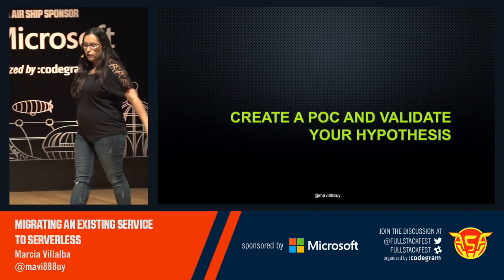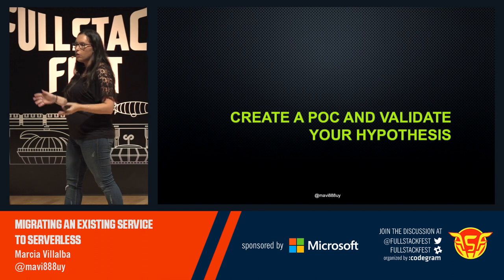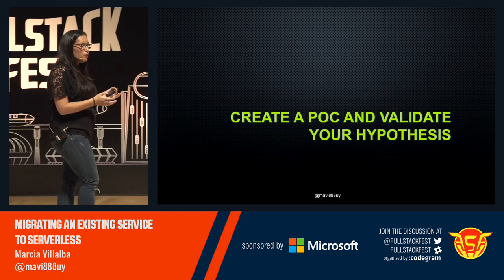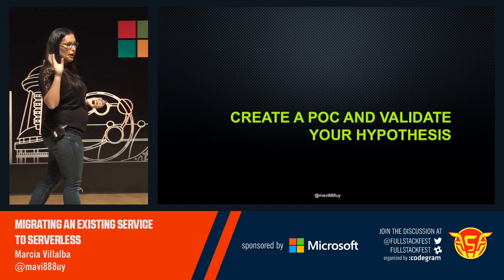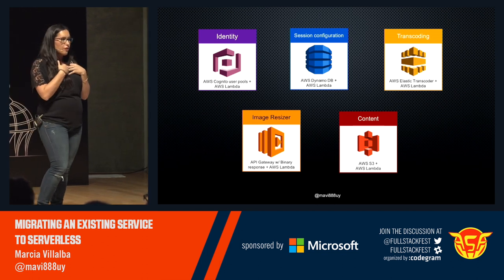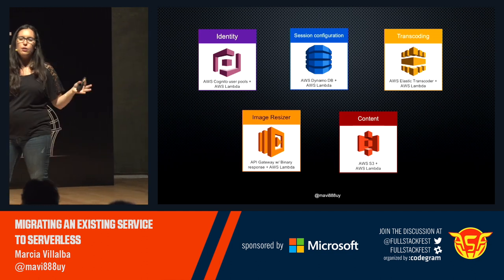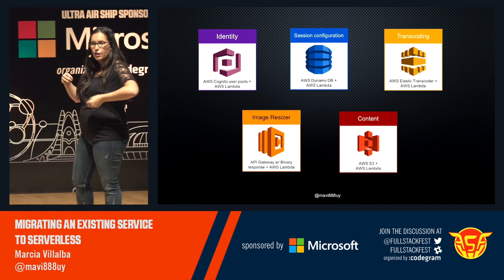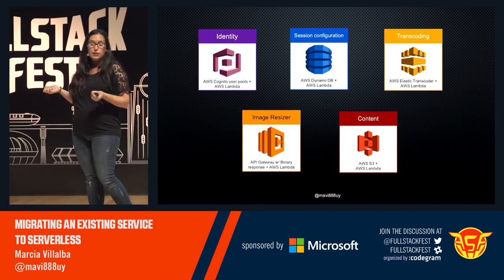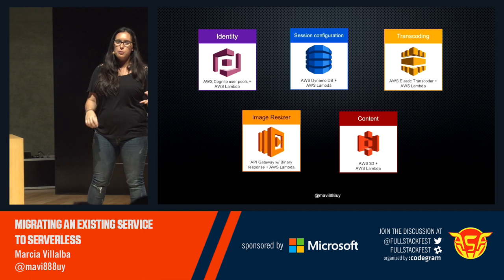The next step was working on proof of concepts — all of this without putting a line of production code. We built five proof of concepts. These are our proof of concepts, not yours — they are based on my problems. Whenever you're thinking about this, think about your own proof of concepts and how you can use them to validate your problems. The first two were validating the legacy systems — picking the most important critical legacy systems we needed to replace.